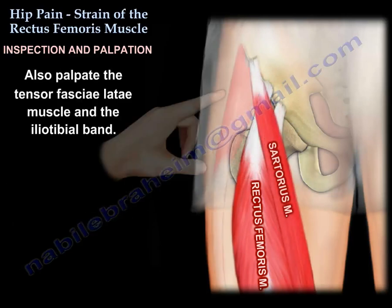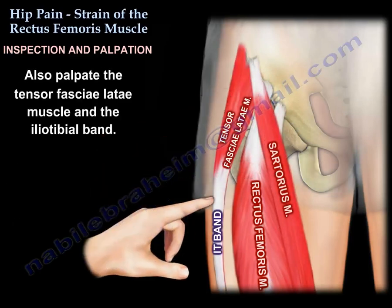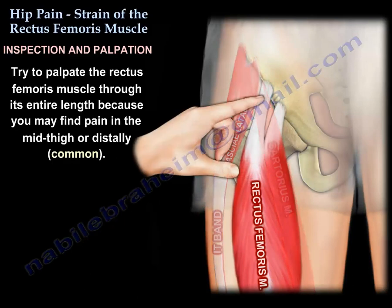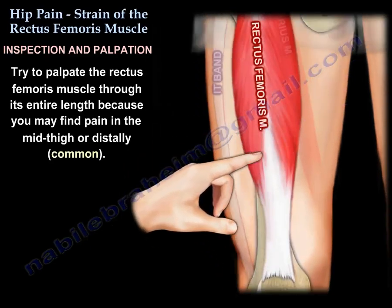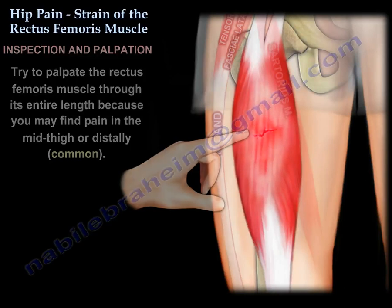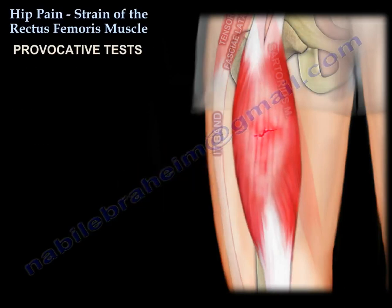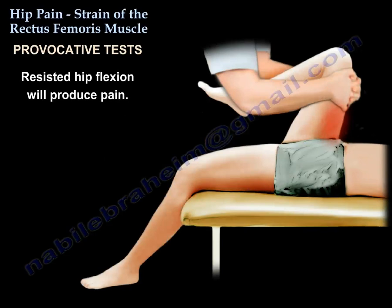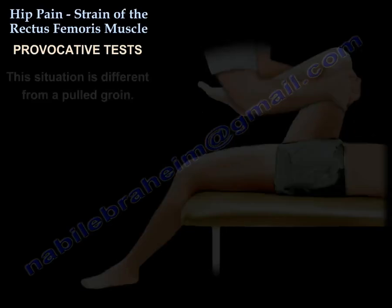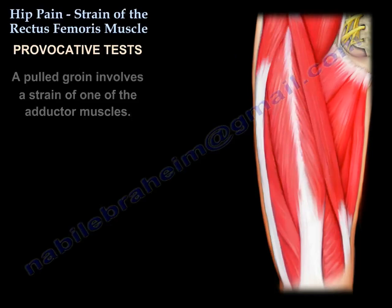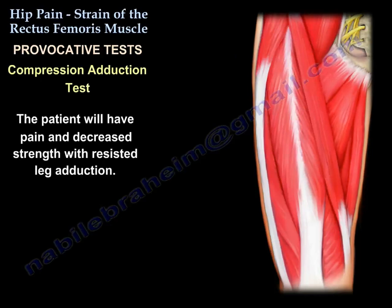Also palpate the tensor fasciae latae and the iliotibial band around the hip area. Then palpate the rectus femoris muscle through its entire length, as you may find pain in the mid-thigh or distally, which is common. Next, perform the provocative test: resisted hip flexion will produce pain. This is different from a pulled groin, which is an adductor muscle strain — the patient will have pain and decreased strength with resisted leg adduction.